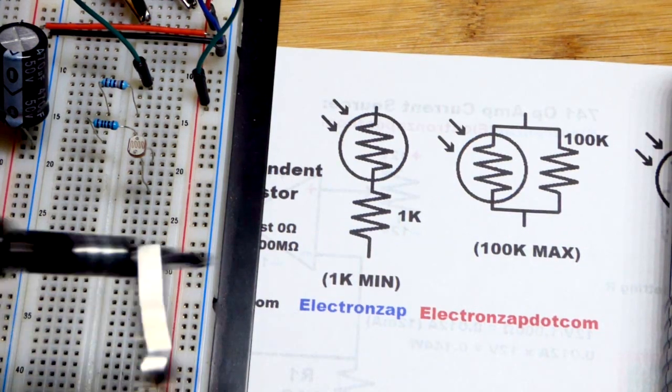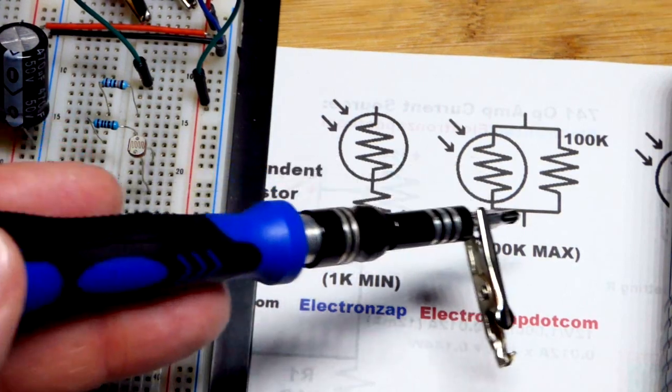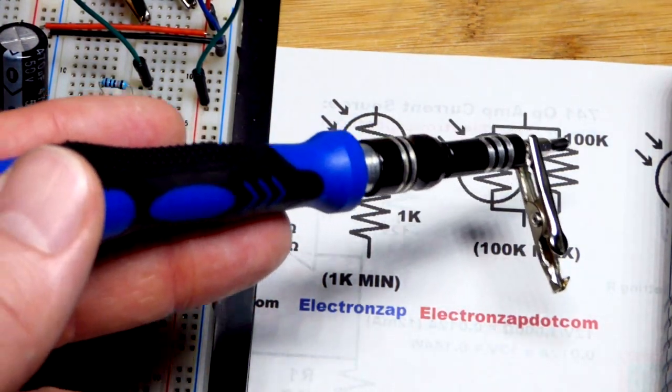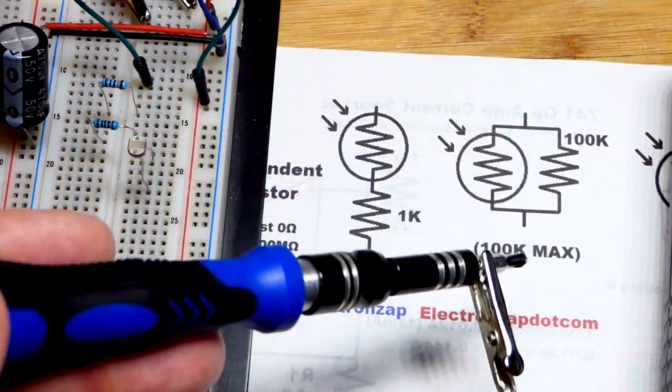That'll be it. No matter how much the resistance goes up with the light dependent resistor it can never exceed 100 kilo ohms of equivalent resistance with the two of them because we always have this path right there.